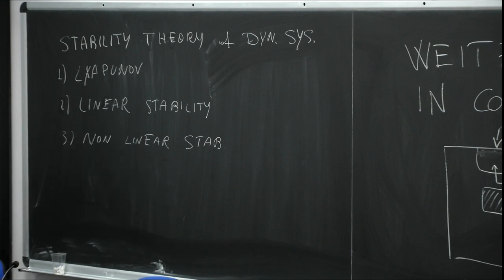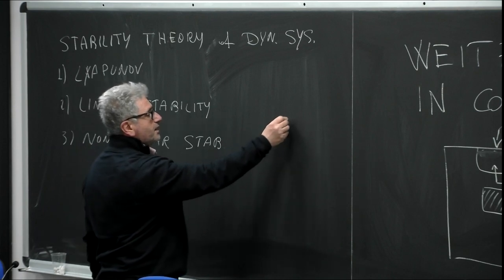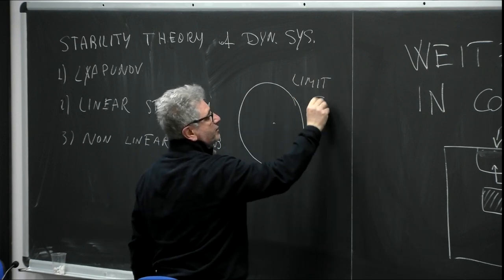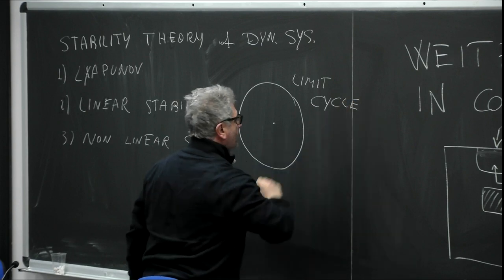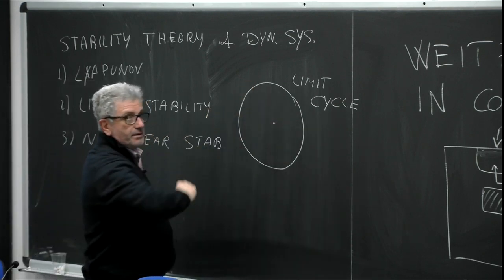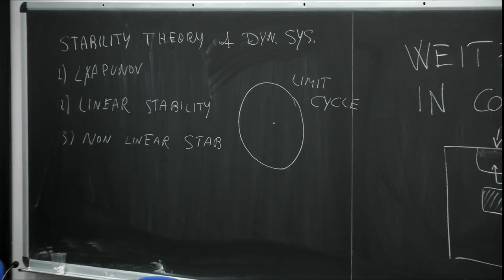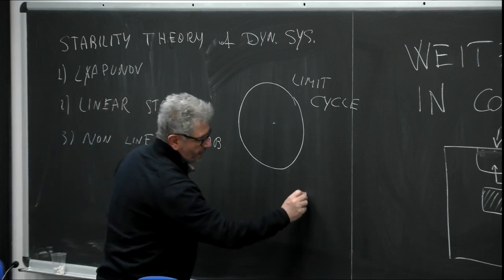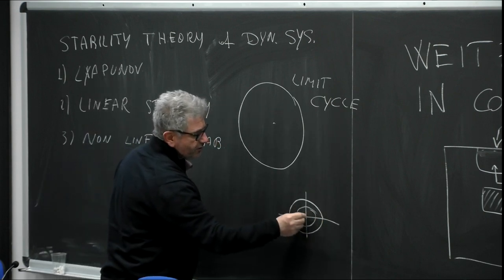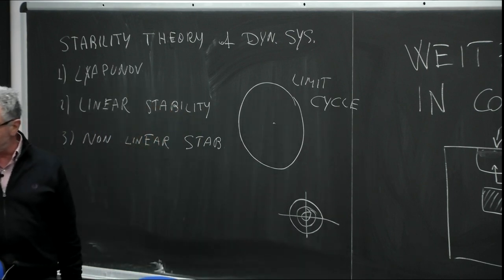We also discussed how, around a fixed point, you can have what is called a limit cycle. The limit cycle should be unique — it's a closed orbit along which the motion repeats — and this uniqueness makes the difference with the case where you have elliptic points with lots of closed trajectories around them.